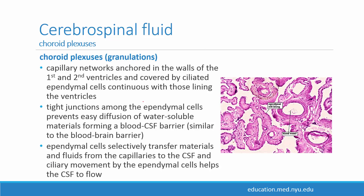The choroid plexuses, also known as the choroid granulations, are where cerebrospinal fluid is made. They're found in the walls of the first, second, and third ventricles — capillary networks that form a little knot in the wall of the ventricles. These are covered by ependymal cells, which are ciliated cells continuous with the lining of the ventricles.